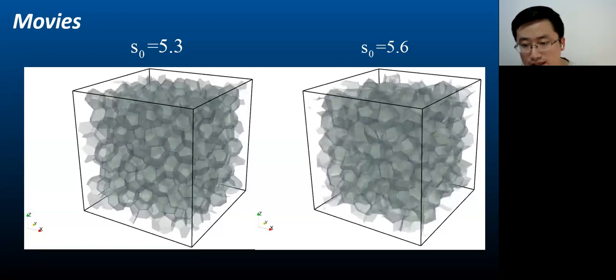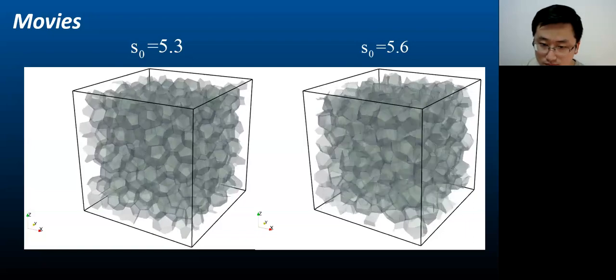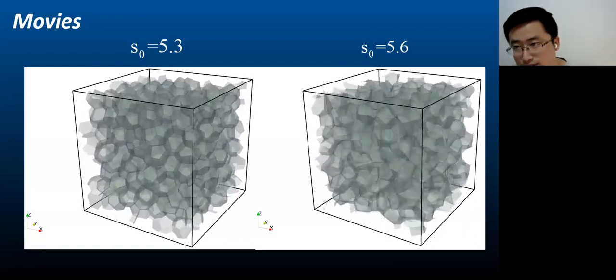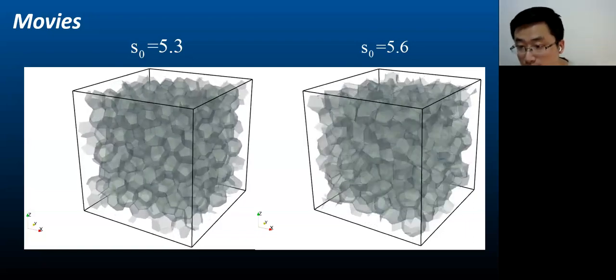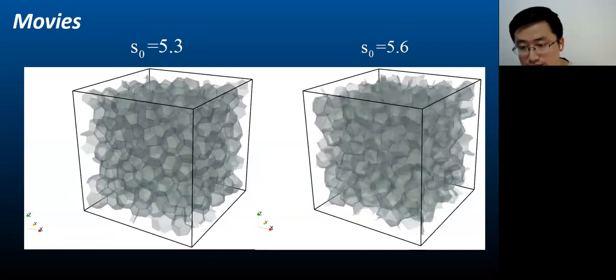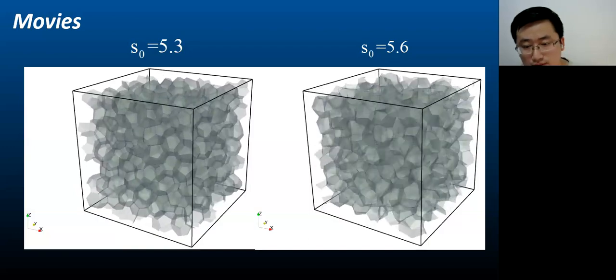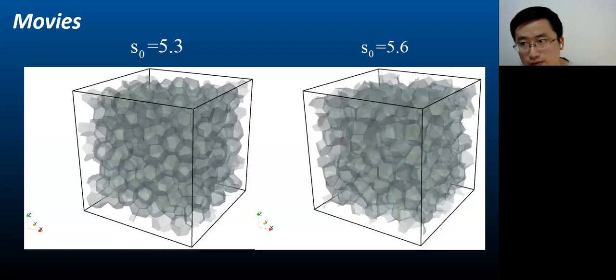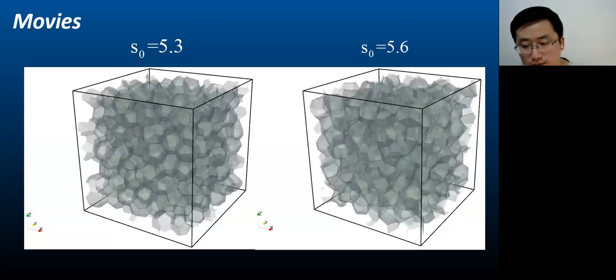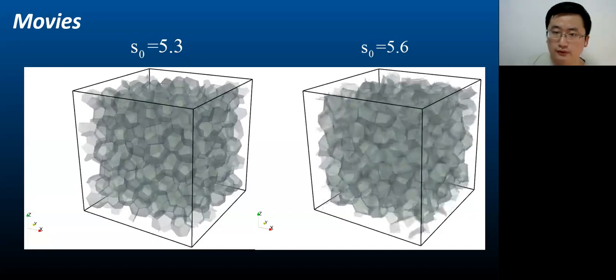This movie shows the dynamics of two systems with different target shape indices. The system with lower target shape index S naught looks like solid, with S naught equals to 5.3, whereas the system with higher S naught looks like fluid.